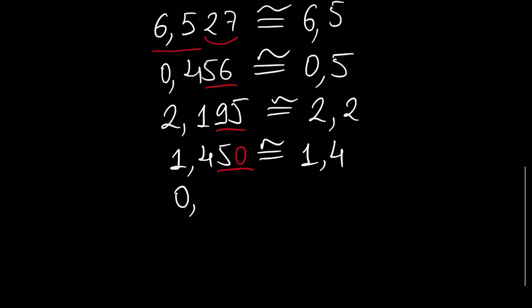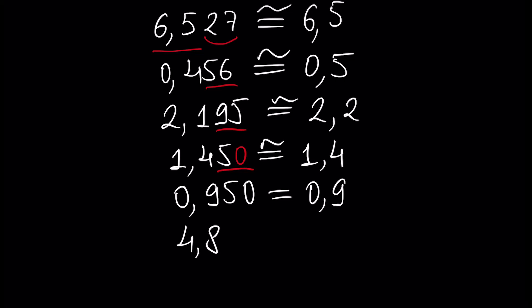For the number 0.95, this is equal to 0.9 because we want to leave two digits. And the number 4.851 is approximately equal to 4.9, because 51 is bigger than 50. So now we can write an approximate number to any decimal place.